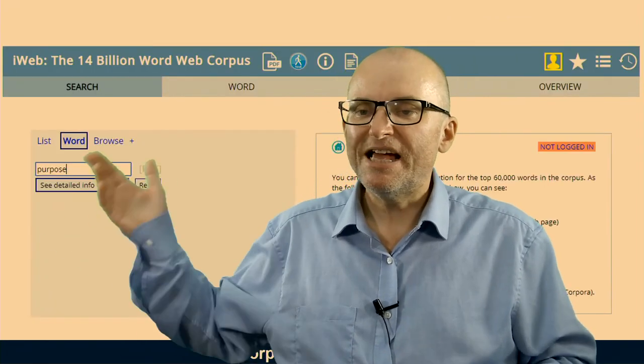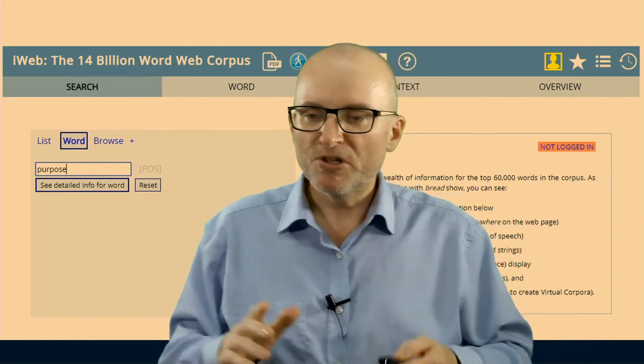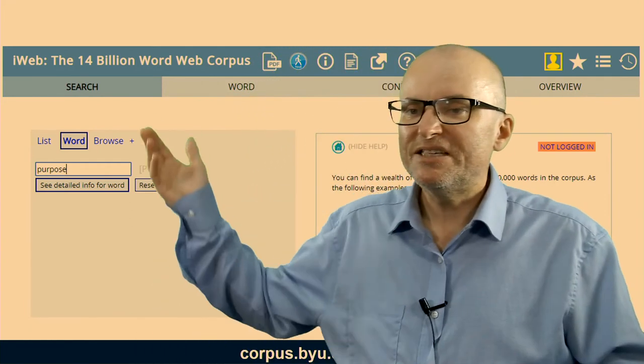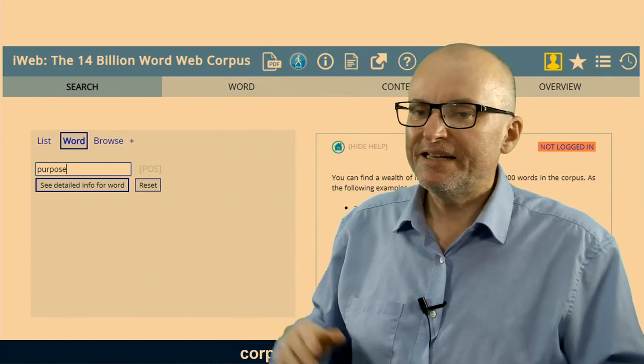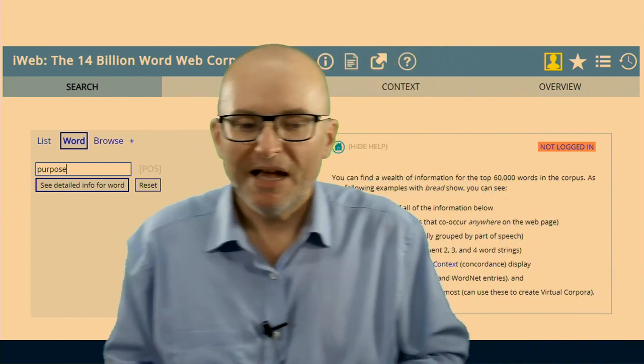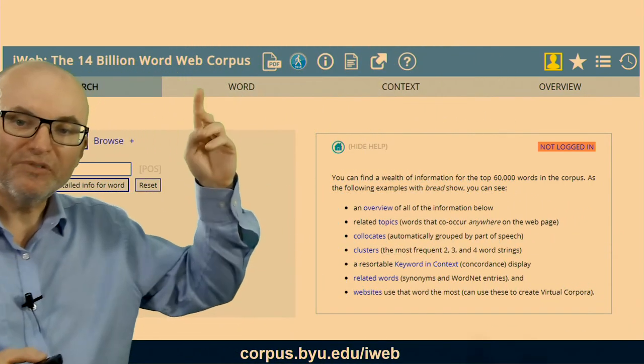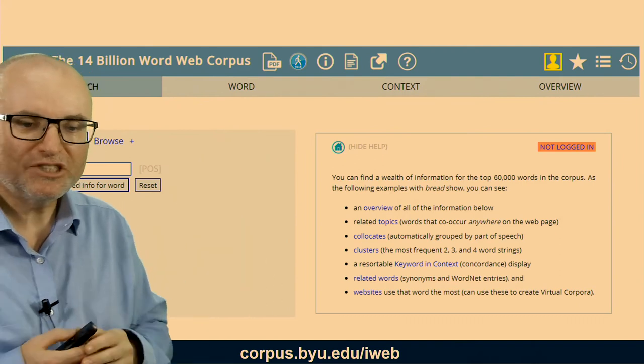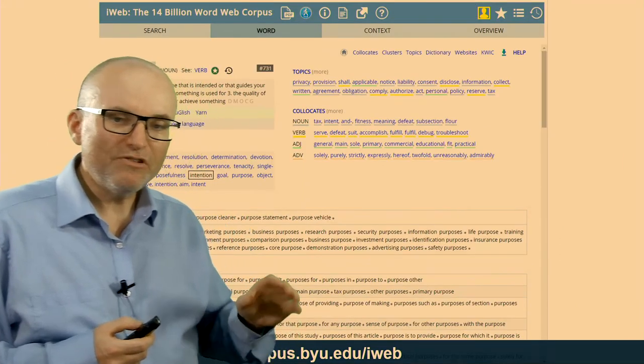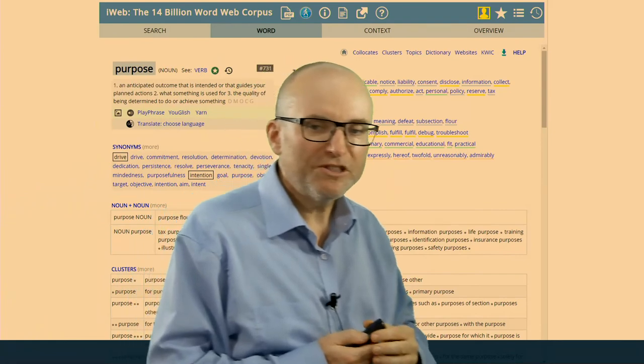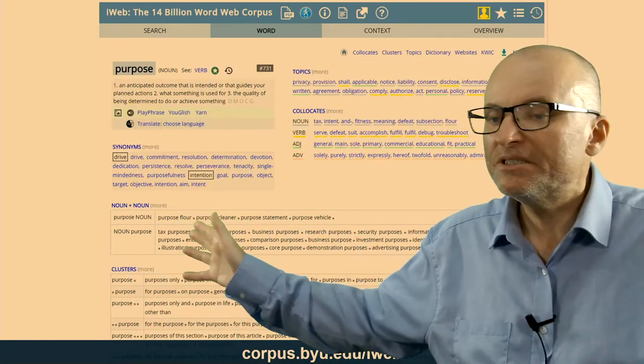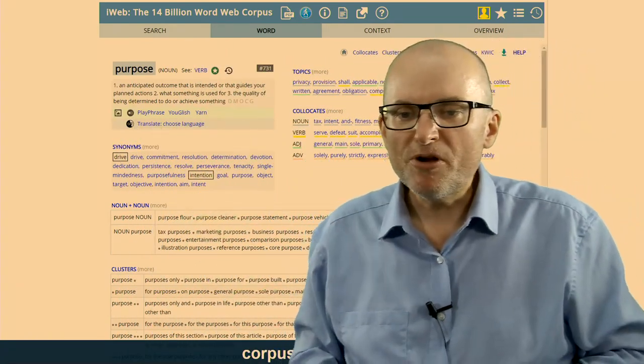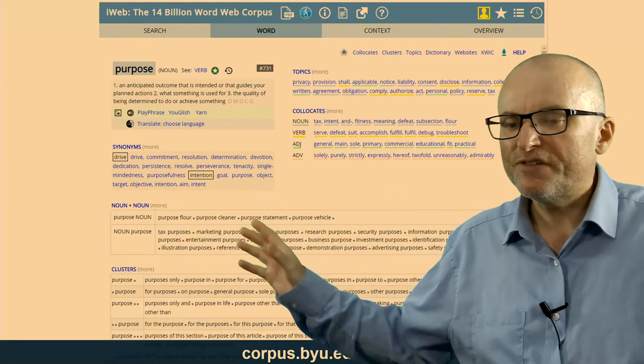However, there are some good tools that can help you more with the words you're choosing. One of them is the iWeb Corpus, a free online tool provided by Brigham Young University. If you go to the word section and search for a word, it will give you an overview of the word. It will give you the definition just like a dictionary, synonyms like a thesaurus. But more importantly, it will give you all the different uses of the word.